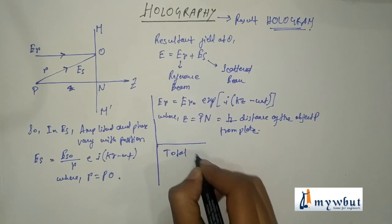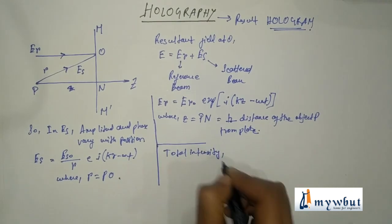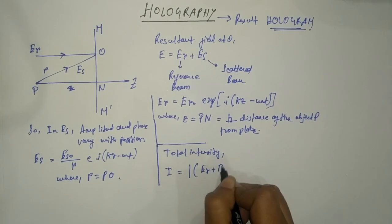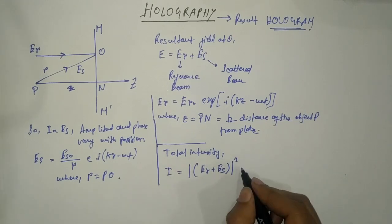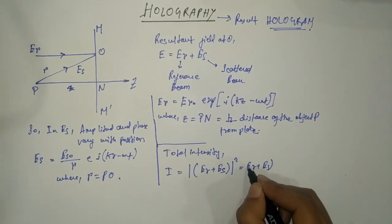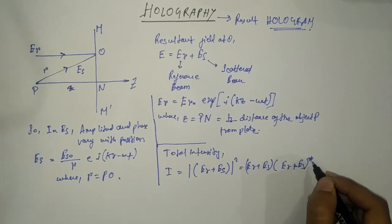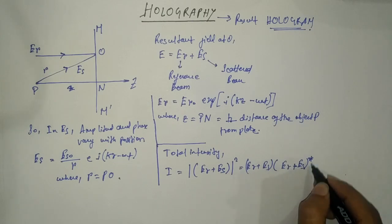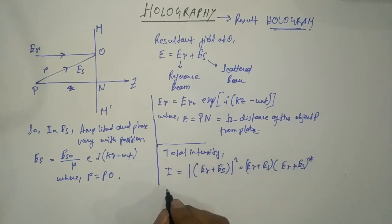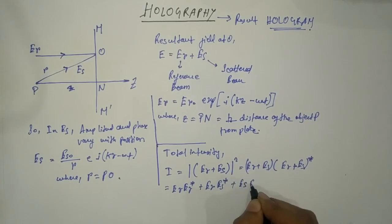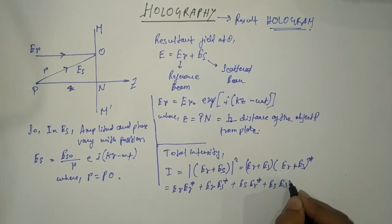The total intensity at O is given by I = |E_r + E_s|² = (E_r + E_s)(E_r + E_s)*, which expands to E_r·E_r* + E_r·E_s* + E_s·E_r* + E_s·E_s*.